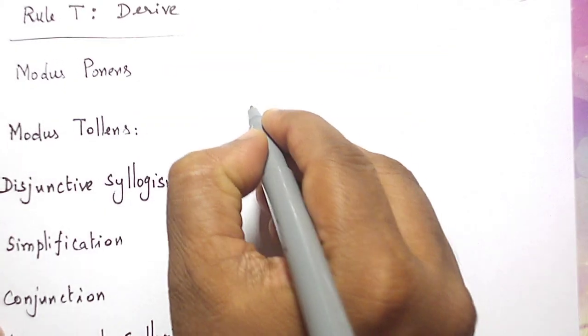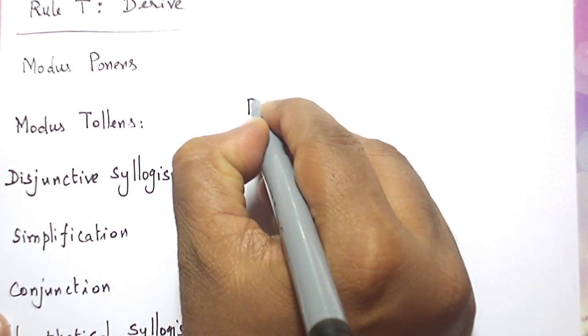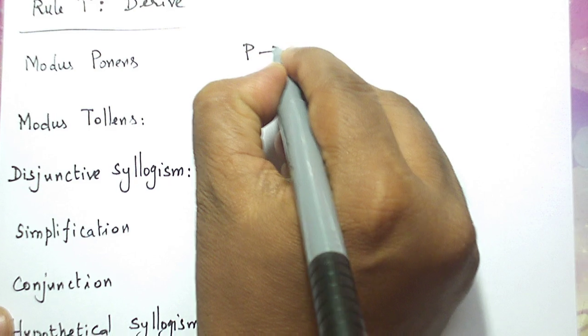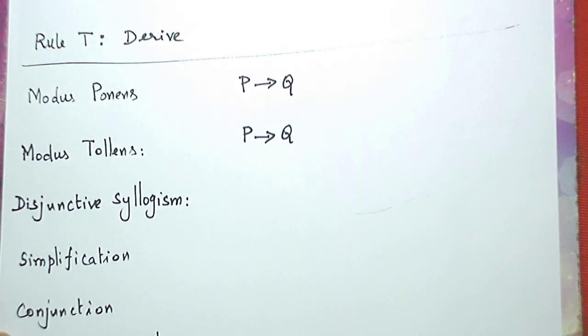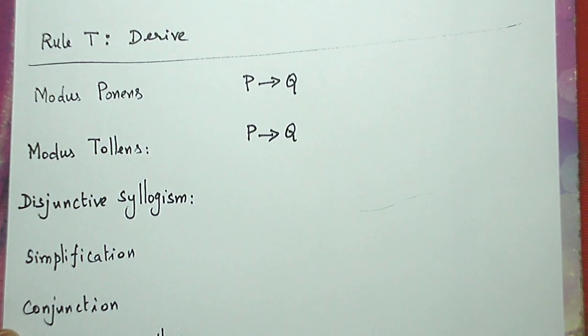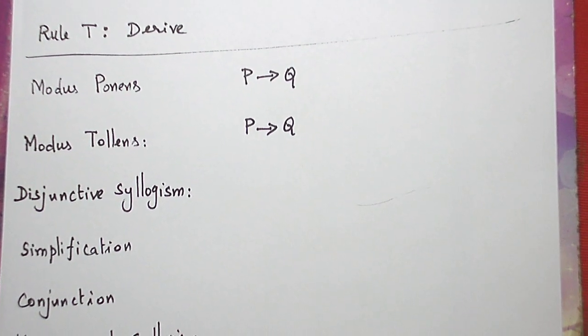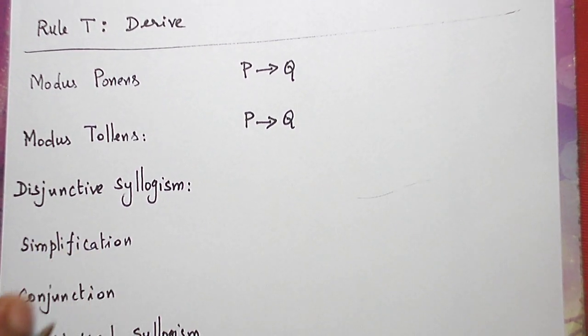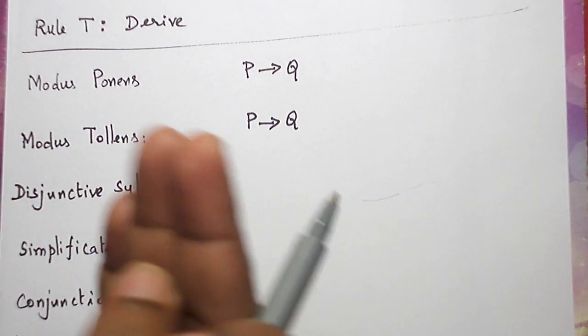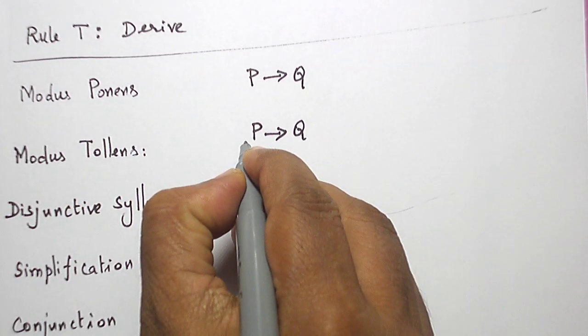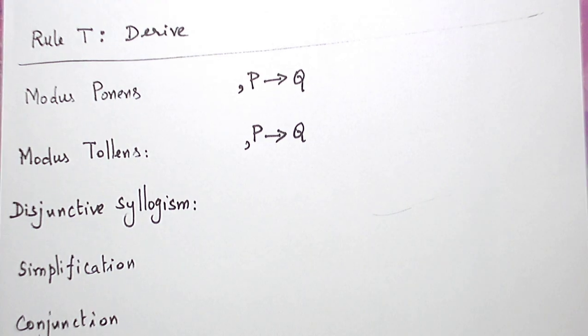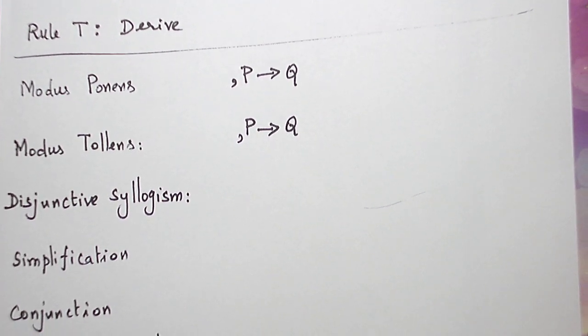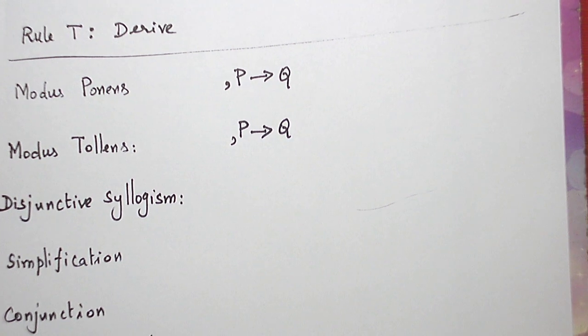Suppose we are given a conditional statement like this, P conditional Q. We have to either use Modus Ponens or Modus Tollens. This single statement formula cannot be used to derive any statement formula. Along with this statement formula, we need one more statement formula. And that statement formula decides whether we have to use Modus Ponens or Modus Tollens.